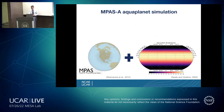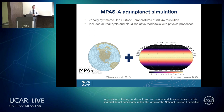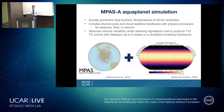We studied these questions in an idealized aquaplanet simulation using the Model for Prediction Across Scales — Atmosphere, or MPAS-A. The model had zonally symmetric sea surface temperatures at a 30-kilometer grid spacing. It included the diurnal cycle and cloud radiative feedbacks along with other basic physical properties. In our simulations, there was no land, no seasons, and no sea ice. This removes internal variability while retaining all the ingredients necessary to create convergence and, more importantly, tropical cyclones.